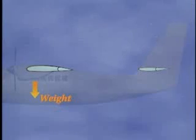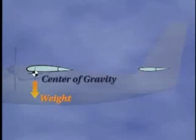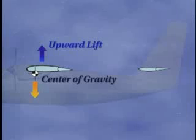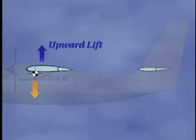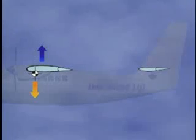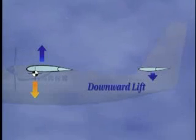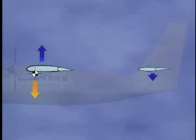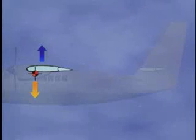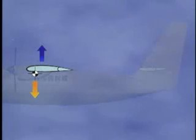In straight and level flight, the vertical forces acting on the aircraft are the weight, which acts through the center of gravity, the upward lift, which is generated primarily by the wing, and the downward lift, generated by the horizontal stabilizer. The center of gravity, which is also the aircraft's pivot point, is almost always forward of the wing center of lift.